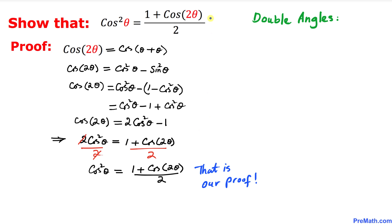And that's our proof. As you can see, cosine squared theta equals one plus cosine of two theta divided by two. Thanks for watching, and please don't forget to subscribe to my channel for more exciting videos!